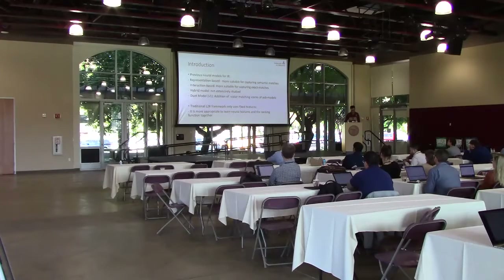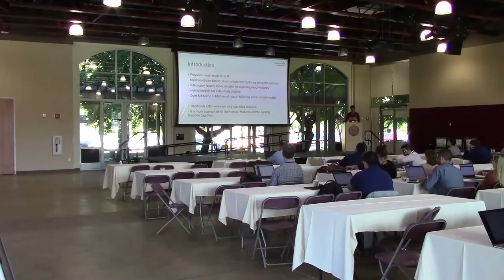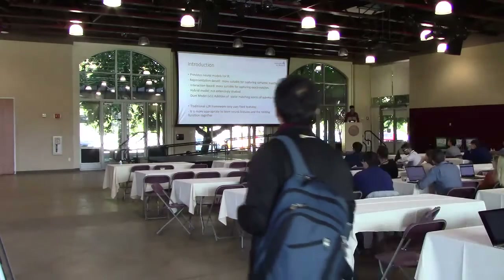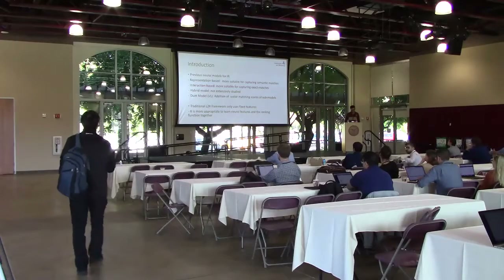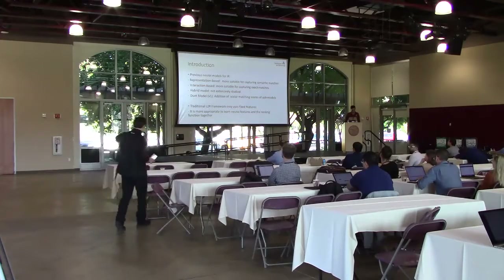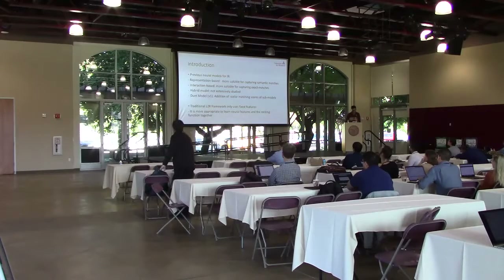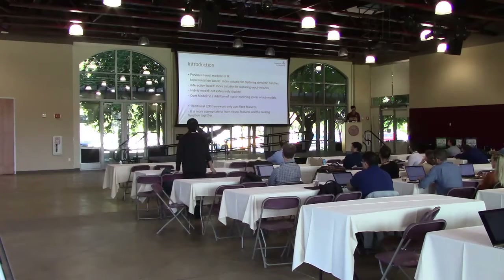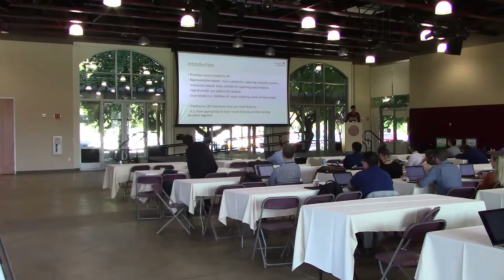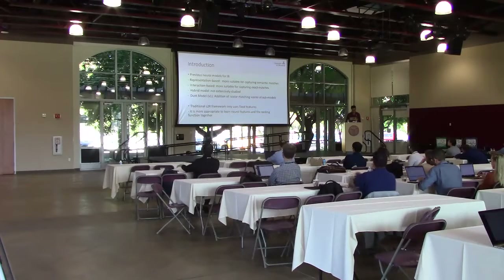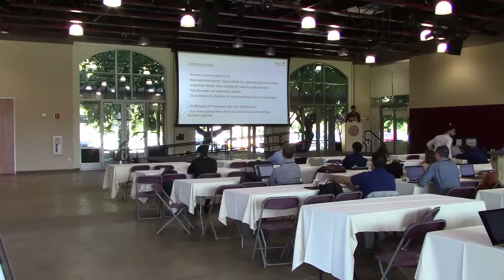In order to take advantage of both paradigms, there are also hybrid models which try to combine the two. However, the hybrid model is not very extensively studied. The original version of the Duet model only uses two sub-models and produces two sub-scores from the representation sub-model and the interaction sub-model, and combines the scalar matching scores of the two to produce a global matching score. However, we argue that that is not the optimal way to produce a global matching score, since the two parts may have some interactions between them.